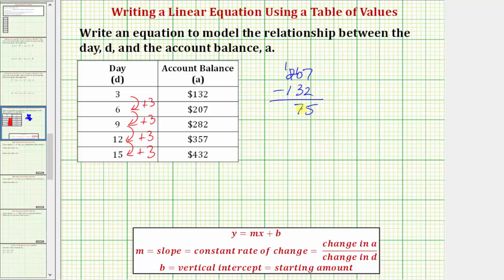So because this difference is seventy-five, the account balance increases by 75 dollars from day three to day six.